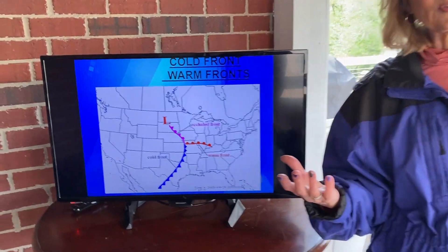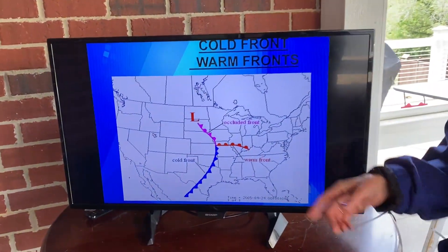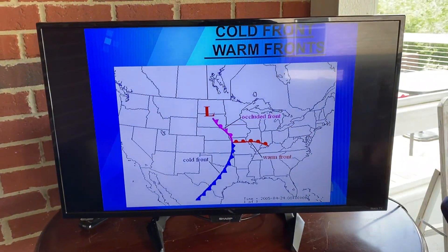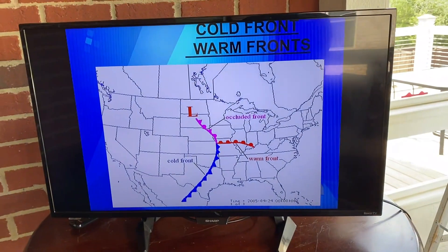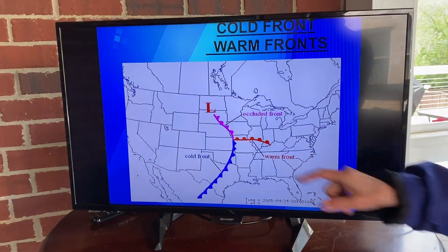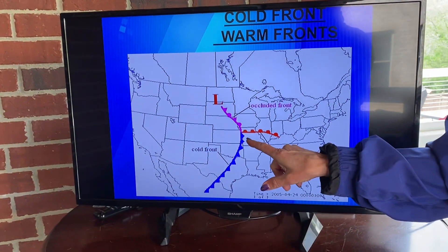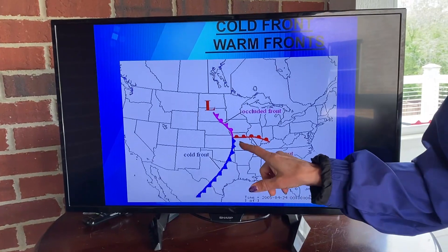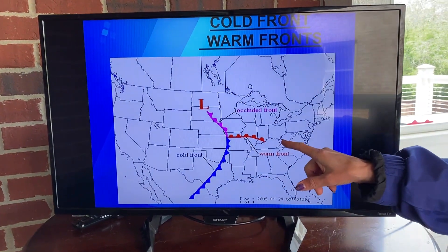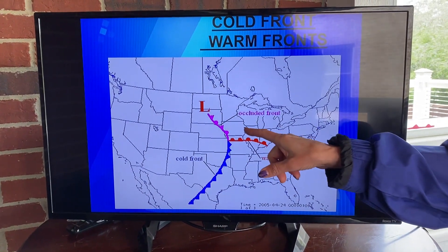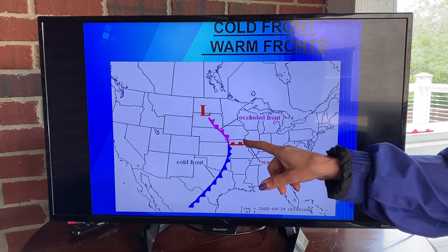So let's look at those on a weather map. There is our area of low pressure, and you can see the fronts here as well. These are called fronts. This is a cold front. This is a warm front. And this is what we call an occluded front.